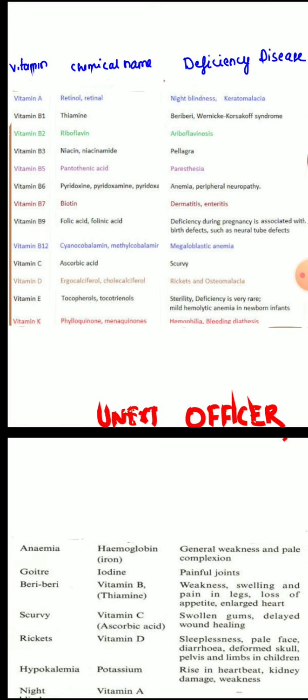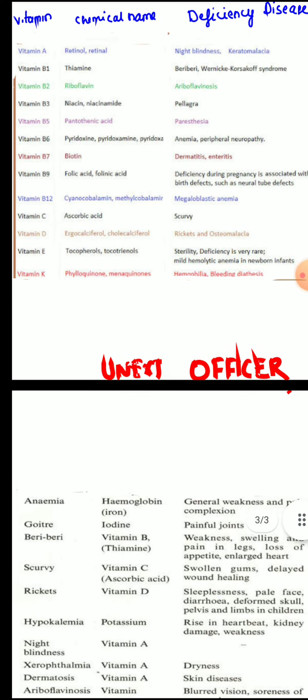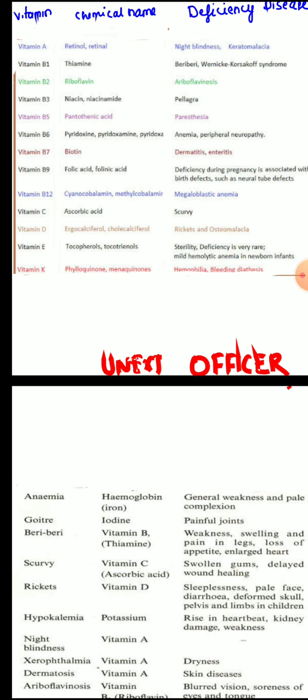Bone changes are also seen in scurvy and these bone changes are called scorbutic rosary. Vitamin D deficiency, or calciferol deficiency, causes rickets in children and osteomalacia in adults. Vitamin D is needed for the absorption of calcium, so in its deficiency there will be decreased calcium in the bone, leading to weak bones. Bone changes in rickets are called rachitic rosary. In children with rickets, there will be delayed growth and deformity of the chest and rib. Bowed legs and skull deformity can also be seen. In adults, decreased bone strength leads to increased susceptibility to fractures and bone pain.